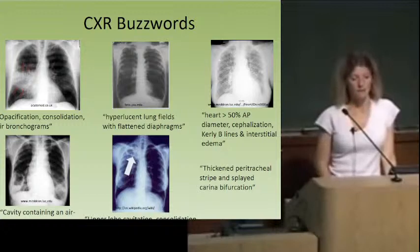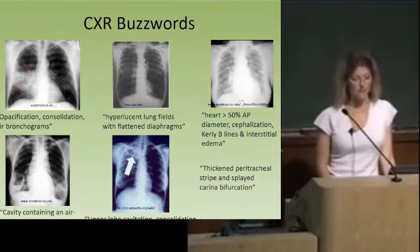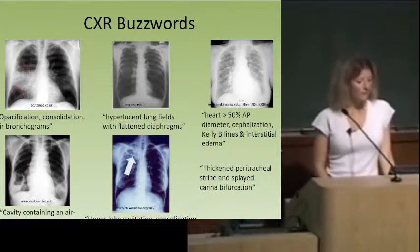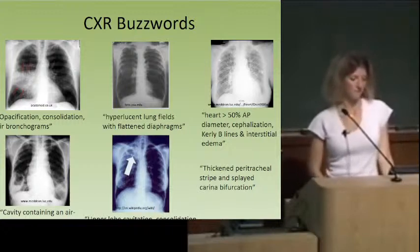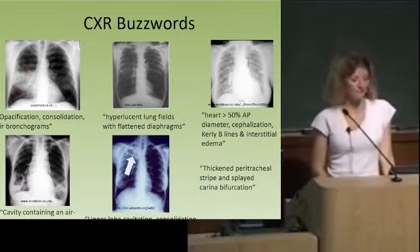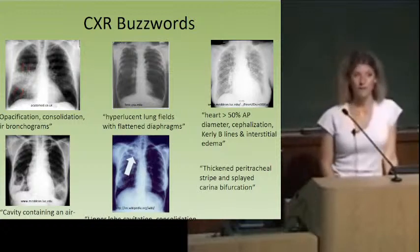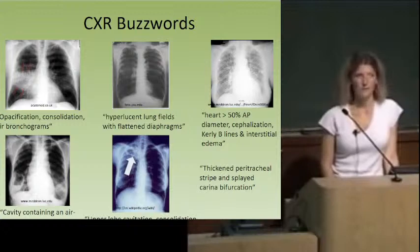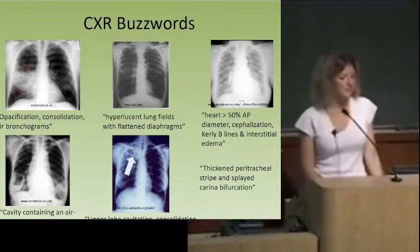The third chest x-ray: the heart is big — greater than half the AP diameter — with Kerley B lines and fluffy interstitial edema. That's CHF. The fourth one: a cavity containing an air-fluid level — that's an abscess. Caused by Staph and also anaerobes, which like to cause abscesses.